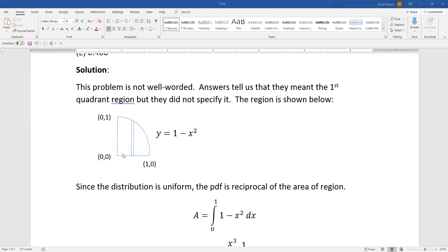Basically we need to find the area of this region. That's calc one, it's area under the curve. This is the curve y equals one minus x squared, and we want the area under it from x equals zero to x equals one.